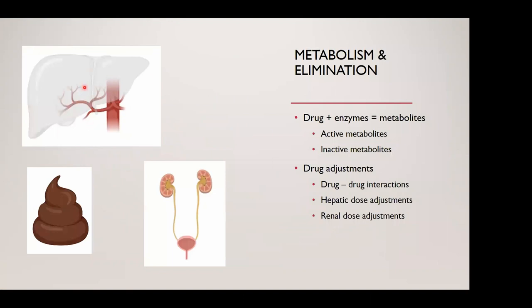Following distribution, everything eventually makes it back to the liver — a highly perfused organ and the site of the next main characteristic of pharmacokinetics: metabolism. In the liver, various enzymes — often cytochrome enzymes — interact with drugs and form metabolites. Metabolites are categorized into two main types: active metabolites, which can exert a similar pharmacological effect as the parent drug, and inactive metabolites, which do not. This is where we start to see an overlap between metabolism and elimination.